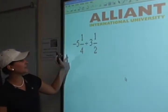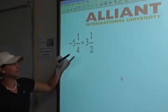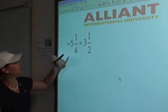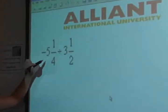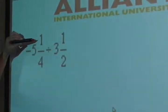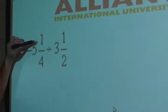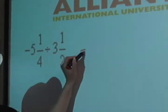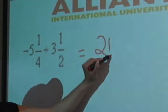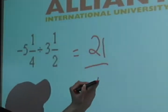So what we want to do is first get these mixed numbers into improper fractions. We're going to start by multiplying 5 times 4 is 20, and then we're going to add the numerator 1. So we get 21 and we're going to keep our denominator over 4.